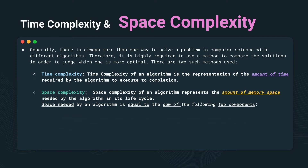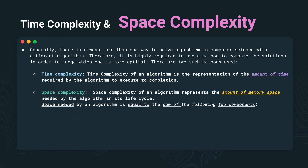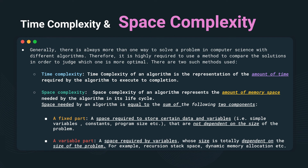Space complexity has two parts. One is the fixed part, and the second is the variable part. The fixed part is basically the space required by the variable to store certain data, and this does not depend on the size of the problem. While the variable part is the space required by the variable whose size is dependent on the size of the problem.